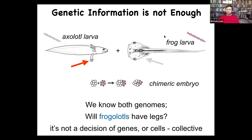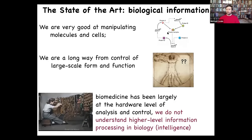Here's a simple example of why we don't have this capability yet. Here's a baby axolotl — a salamander — the babies have little legs. Here's a tadpole of a frog, Xenopus laevis — they do not have legs at this stage. In my lab, we make a chimeric construct called a frogolotl: we take cells from Xenopus and cells from axolotl and we make a frogolotl. I ask a simple question — we have the complete genetic sequence for both of these animals. Can anybody tell me whether the frogolotl is going to have legs or not? The answer is no. We have absolutely no formalism, no models that will make a prediction on this. That's because this kind of thing is not a decision made at the level of molecules or genes, nor at the level of individual cells. It is a collective decision, and we still do not have a good understanding of how cellular collectives make decisions.